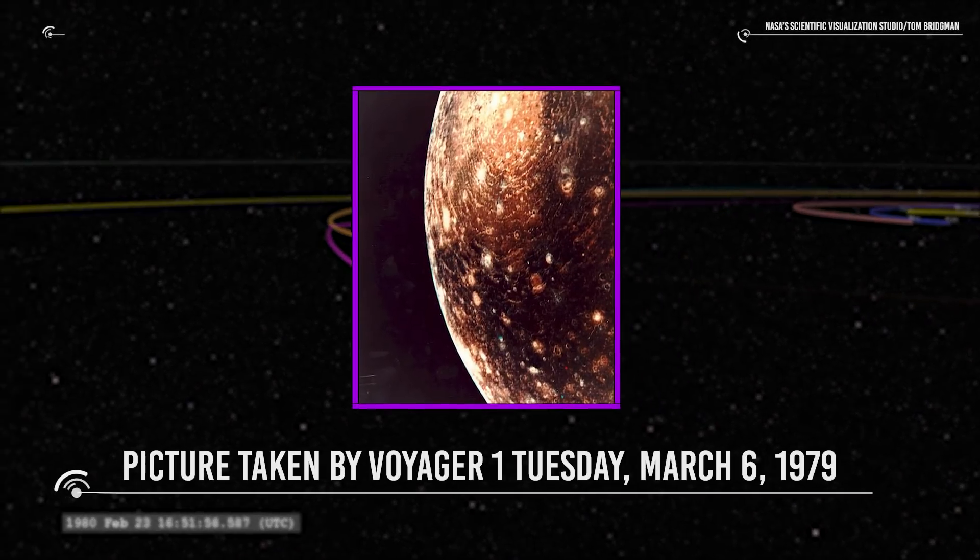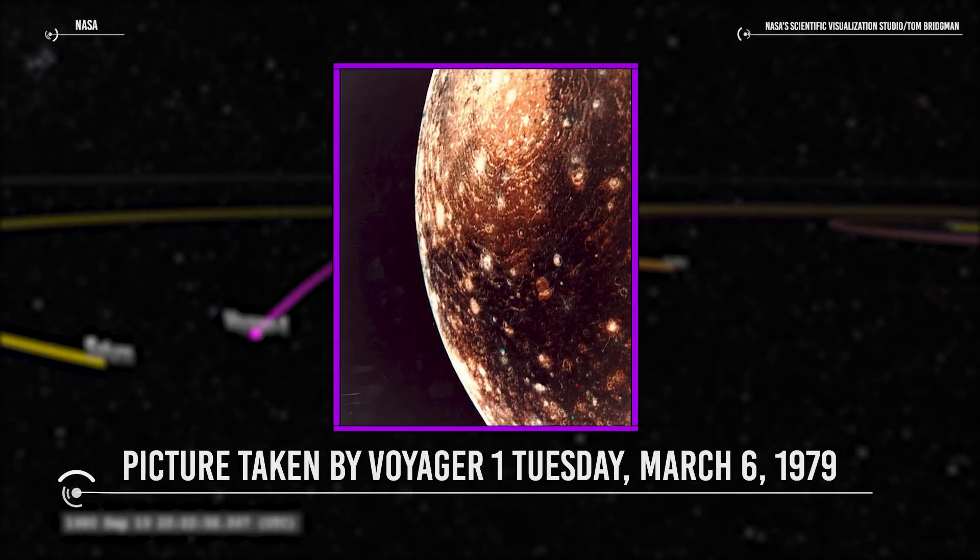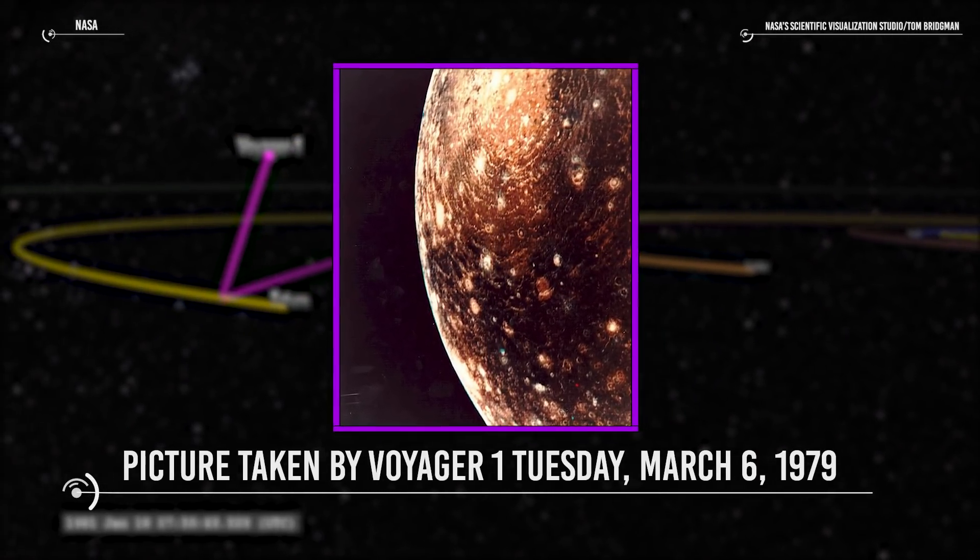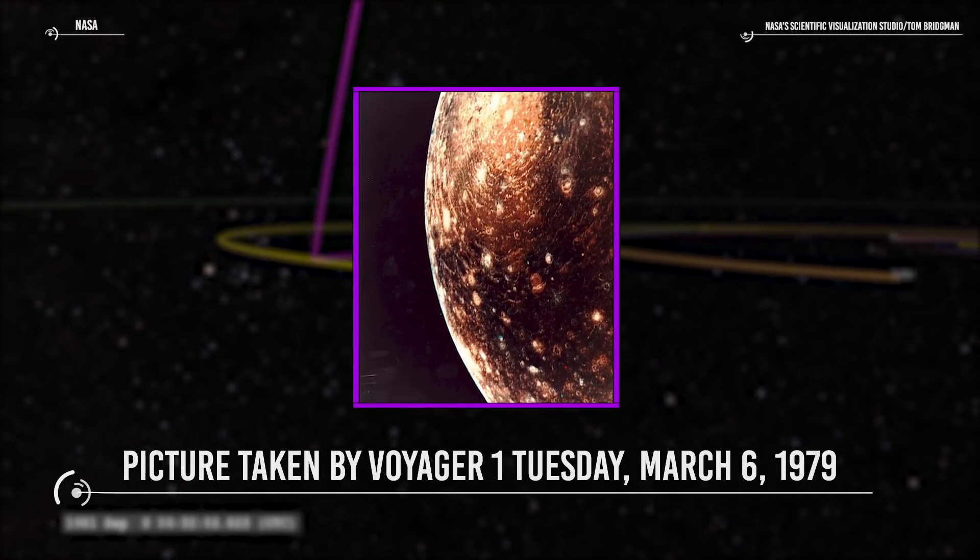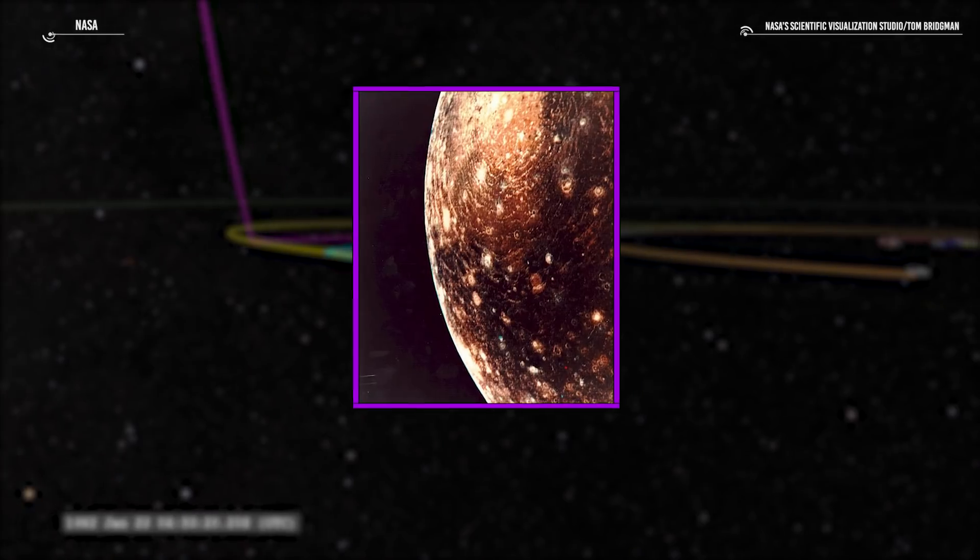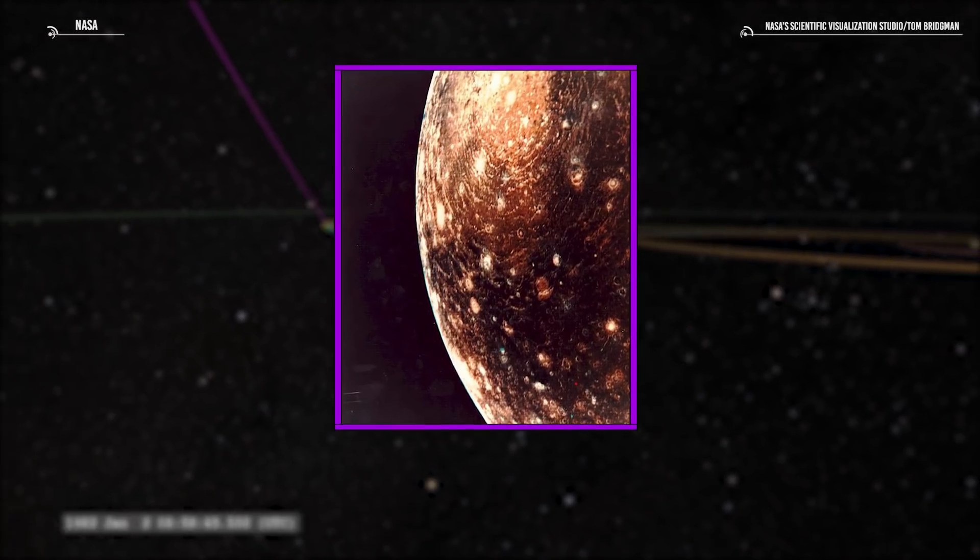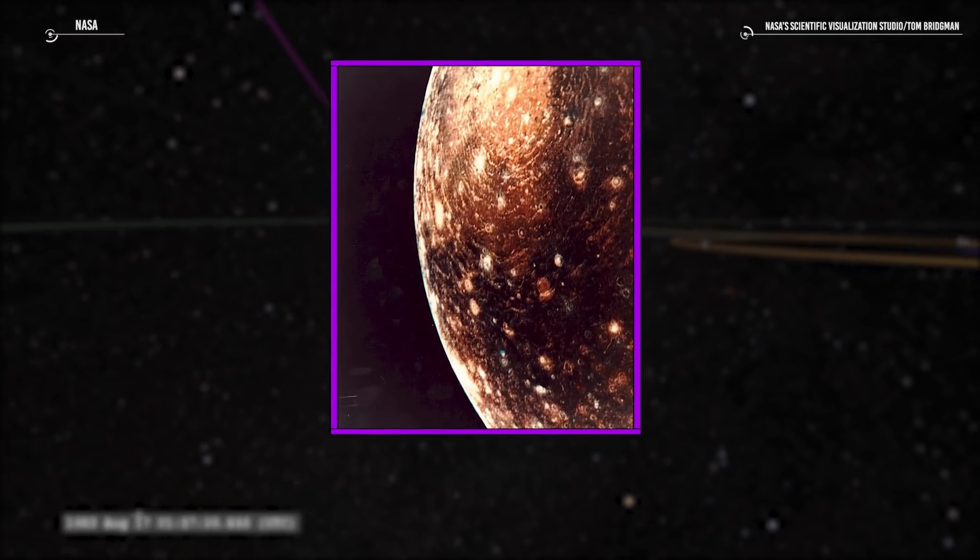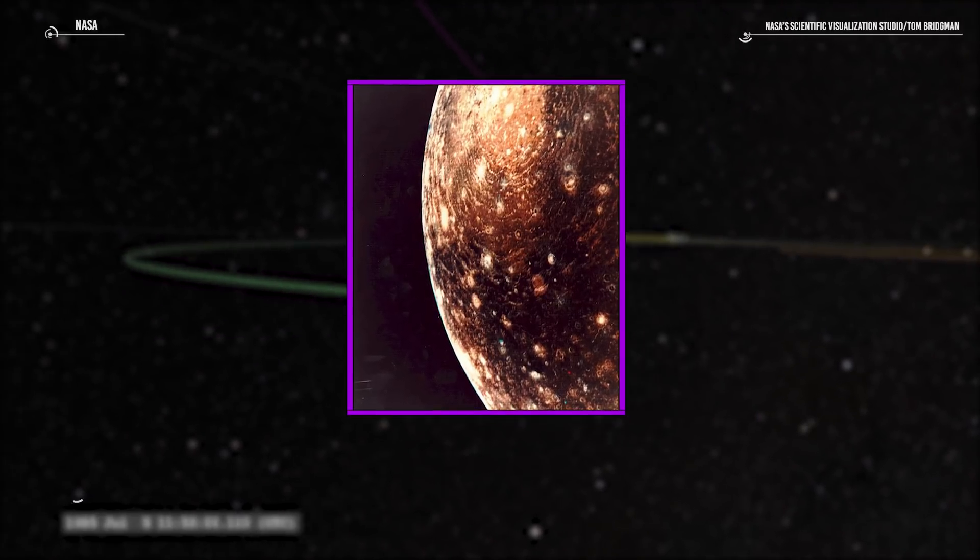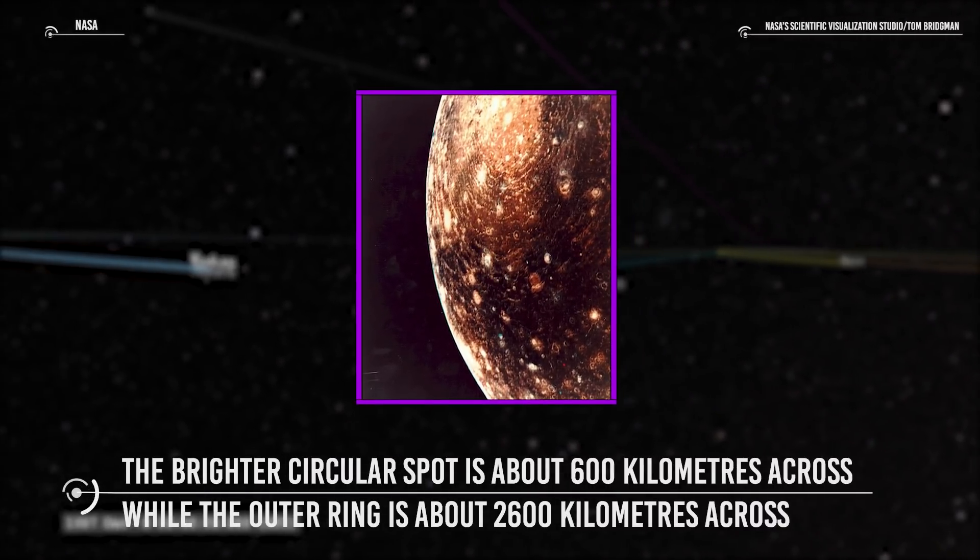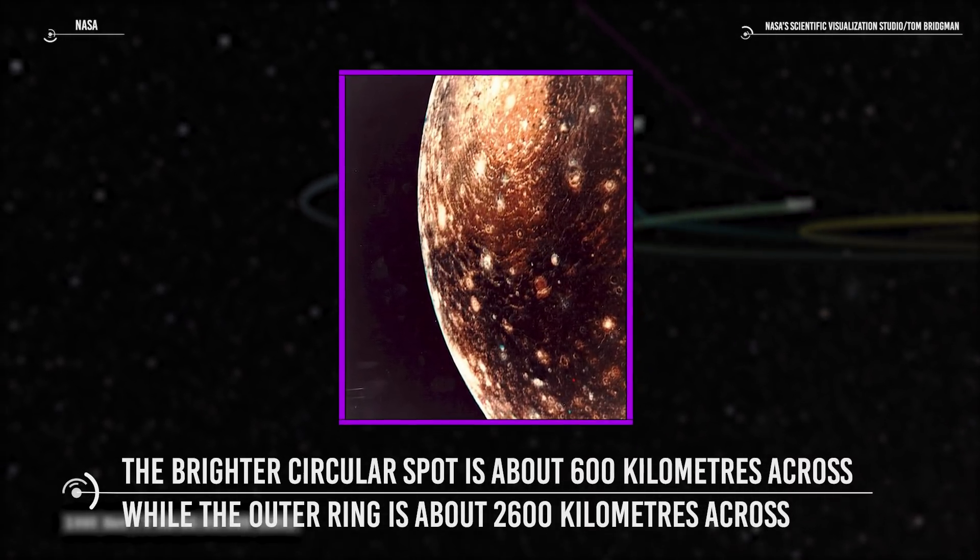This picture of Callisto was taken by Voyager 1, Tuesday, March 6, 1979, during its approach to Jupiter's outer large satellite. The spacecraft was 350,000 kilometers from Callisto at the time and shows features about seven kilometers across the surface. The prominent bullseye-type feature in this picture is believed to be a large impact basin, similar to Mare Oriental on our moon. The brighter circular spot is about 600 kilometers across, while the outer ring is about 2600 kilometers across.